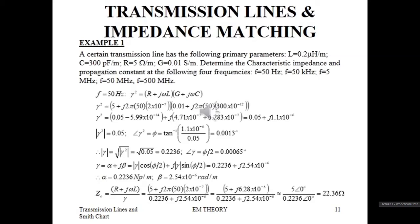Let's try an example. We are given that a certain transmission line has the following primary parameters: the inductance is 0.2 microhenry per meter, the capacitance is 300 picofarads per meter, the resistance is 5 ohms per meter, and the conductance is 0.01 siemens per meter.